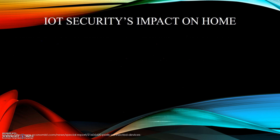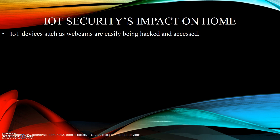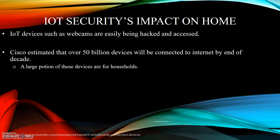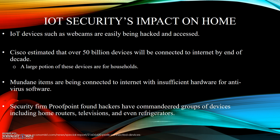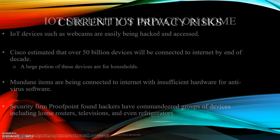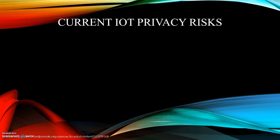IoT Security's Impact on Home. IoT devices such as webcams are easily being hacked and accessed. Cisco estimated that over 50 billion devices will be connected to the Internet by the end of the decade, and a large portion of these devices will be used in households. Mundane items are being connected to the Internet with insufficient hardware for antivirus software, posing a huge problem for the hackability of IoT devices. Security firm Proofpoint found that hackers have commandeered groups of devices including home routers, televisions, and even refrigerators. In some cases, this was due to the fact that the default company password shipped with the IoT device was never changed.